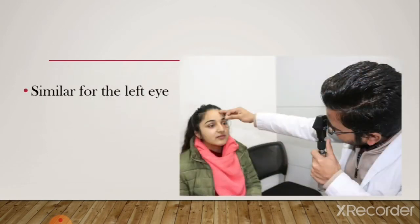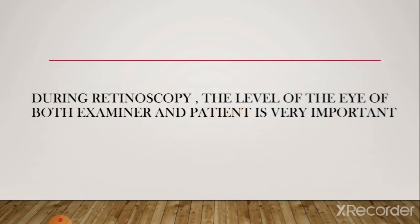Now, the reason the examiner should use the right eye and right hand for the patient's right eye: if you examine the patient's left eye using your right hand and right eye, you end up blocking the patient's vision. The normal working distance for retinoscopy is 50 centimeters, so your body restricts the patient's vision to just 50 centimeters. By using the ipsilateral eye and hand, your body stays out of the patient's visual field so they can properly fixate on the distant object.